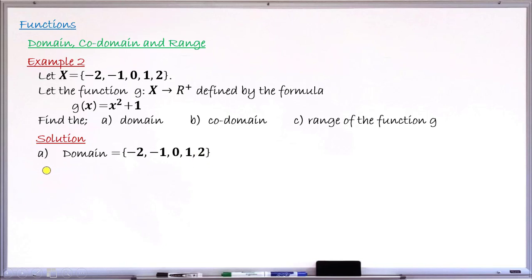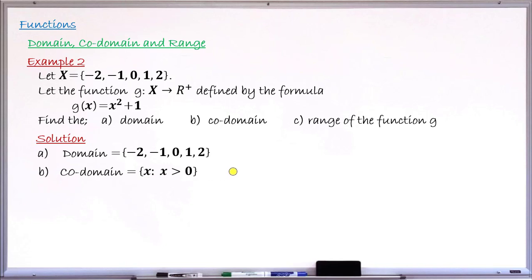Moving to question (b), the codomain. The codomain is always your second set, and this second set is R⁺, meaning all positive numbers. So the codomain, written in set-builder form since it has very many elements, is the set containing x such that x is greater than 0 — meaning all positive values. This is my codomain, because the elements there are very, very many.